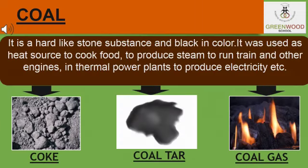Coal is an exhaustible natural resource present in very limited amounts. It is a fossil fuel formed from dead plant matter over millions of years due to heat and pressure. Coal is formed through biological and geological processes on dead and decaying plant matter. The process of conversion of dead vegetation into coal is called carbonization. Coal comes from a coal mine.